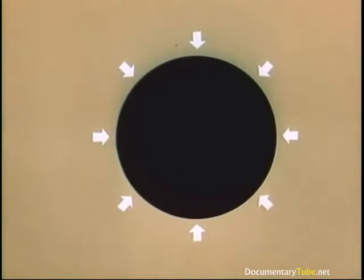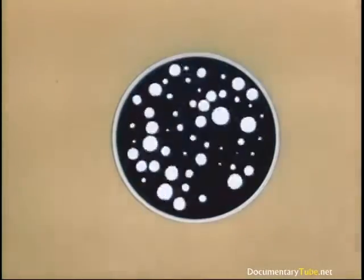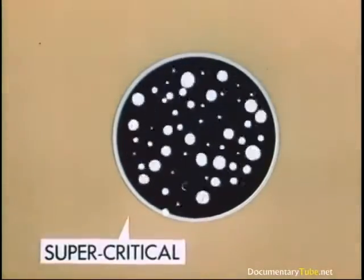One way to cut down neutron loss and increase the number of fissions is to give them more working room. Yet, since we are dealing with bomb material, we must economize on size. So the best shape is a sphere, which has minimum surface area through which neutrons can escape, with maximum volume in which they can work. And we can further decrease neutron loss by covering our bomb with a special mirror which will reflect the neutrons, turning them back into the field of play. When we get a successful chain reaction growing, we have what is called a supercritical mass.